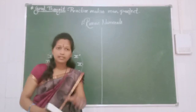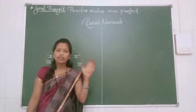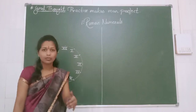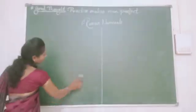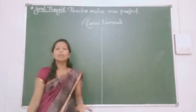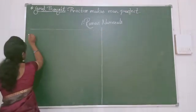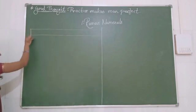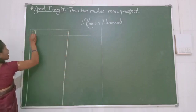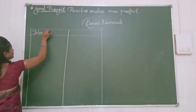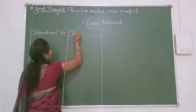Up to fourth standard we learnt numbers like 1, 2, 3, 4, 5, 6 — these are called international numerals. This year we have to learn how to write those international numerals in Roman numerals. So we are making one chart with international numbers on one side and Roman numerals on the other side. We will write international numbers 1 to 10: 1, 2, 3, 4, 5, 6, 7, 8, 9, and 10.